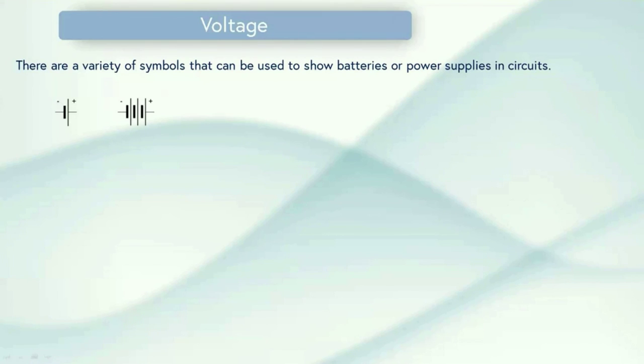There are also a variety of symbols that can be used to show batteries or power supplies in circuits. We've just looked at batteries, but you may also see this type of source which is the same as a battery but often used to show a main supply. So it still has a positive and a negative terminal and it's still providing that direct current supply.